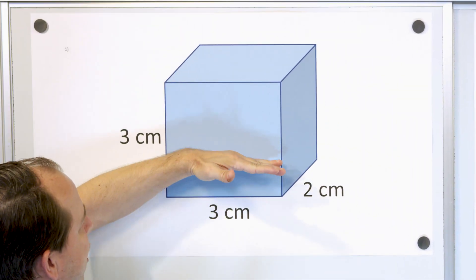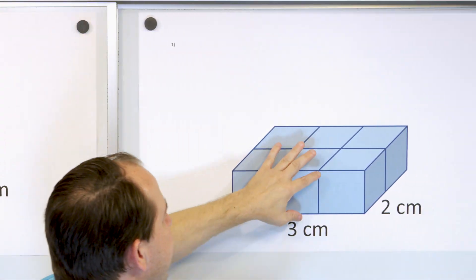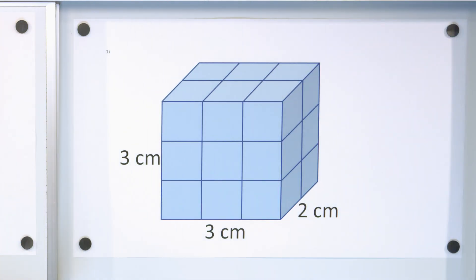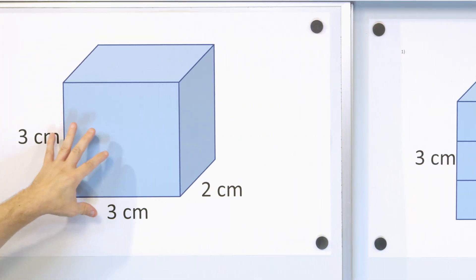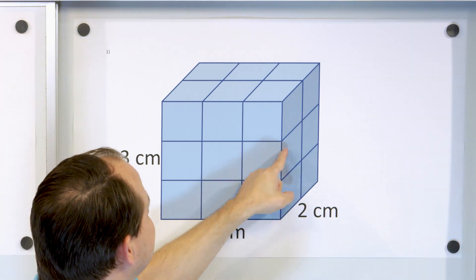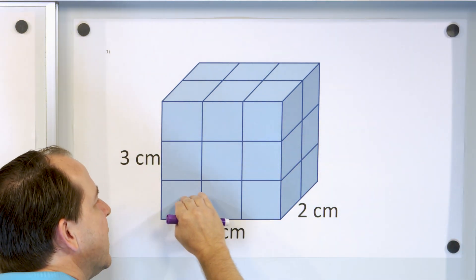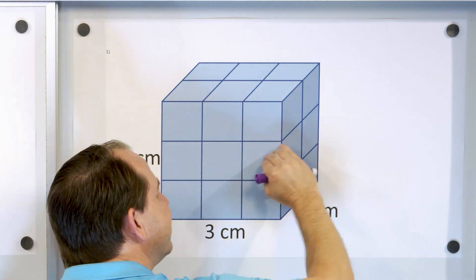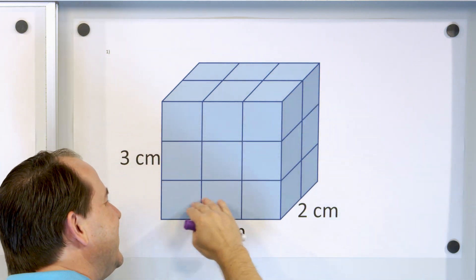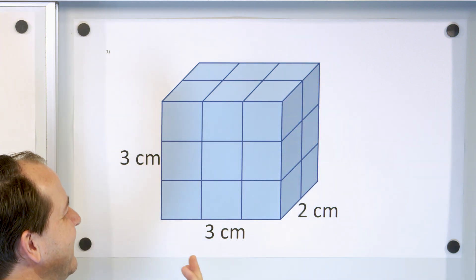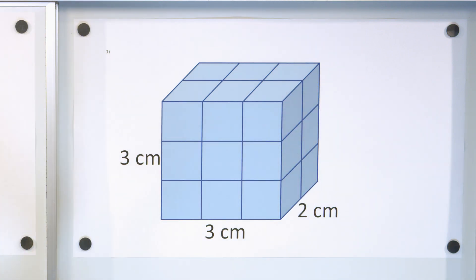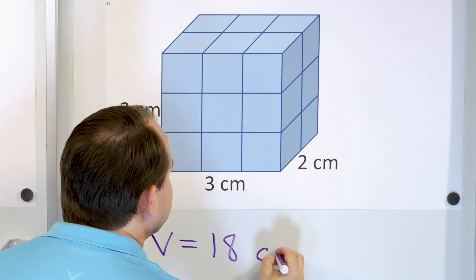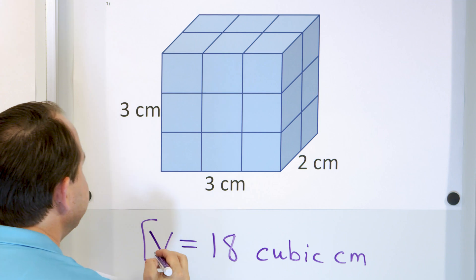But the real object is all of that plus everything above it. To find the volume of the whole object, we take this six from the bottom layer, and then count everything above it. We had six on the bottom layer, then another layer of six, and then another layer of six — so six plus six plus six. Six times three is 18. So the volume V is 18 cubic centimeters.